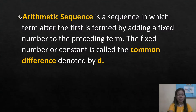An arithmetic sequence is a sequence in which each term after the first is formed by adding a fixed number to the preceding term. That fixed number or constant is called the common difference, denoted by d.